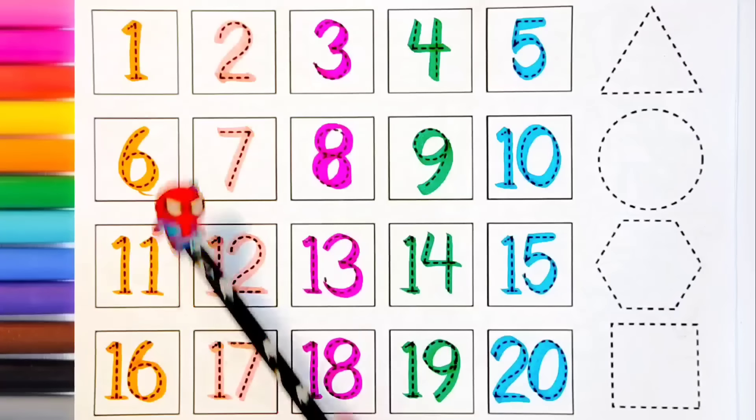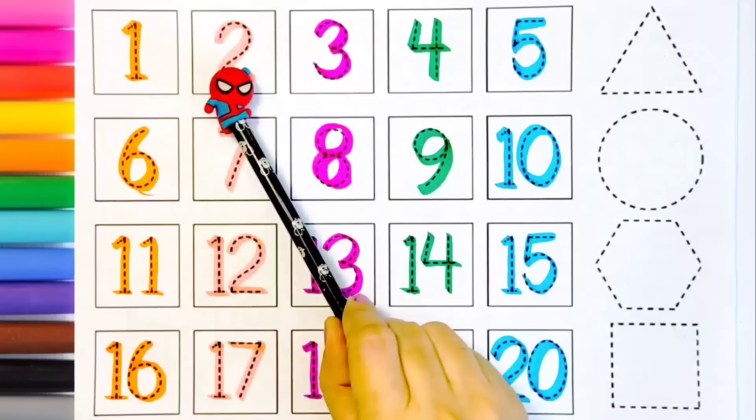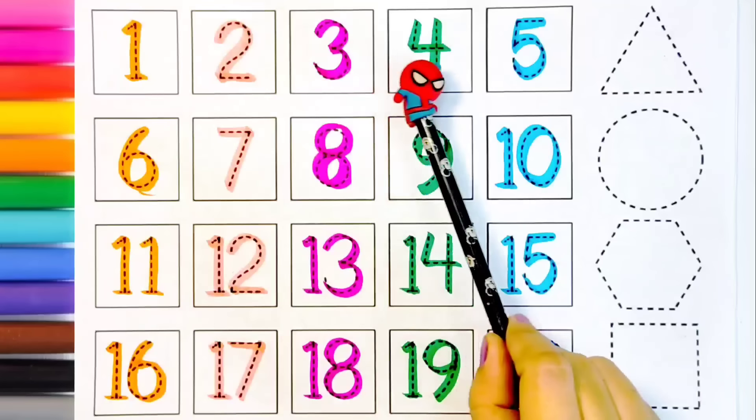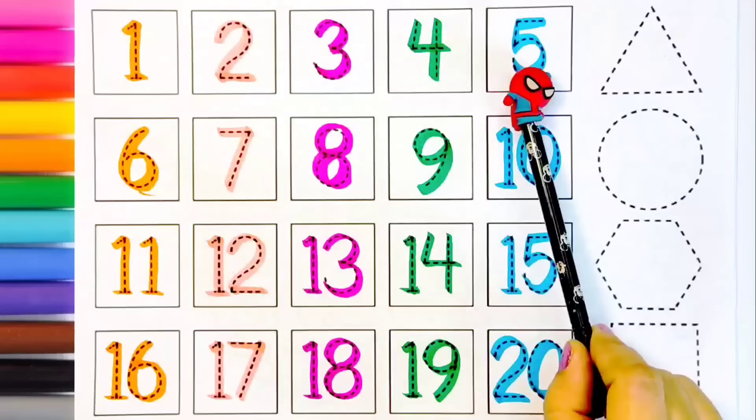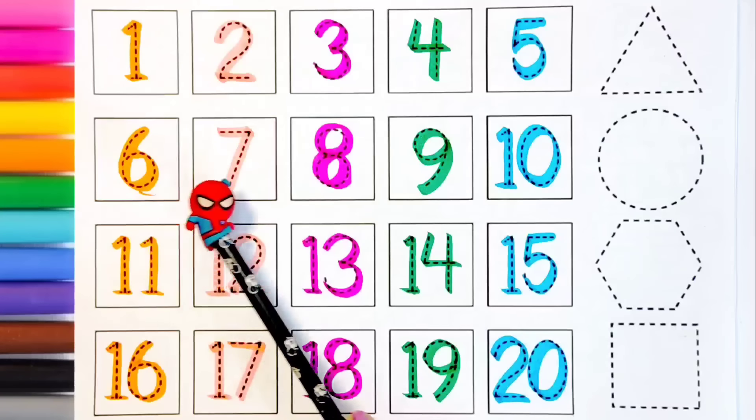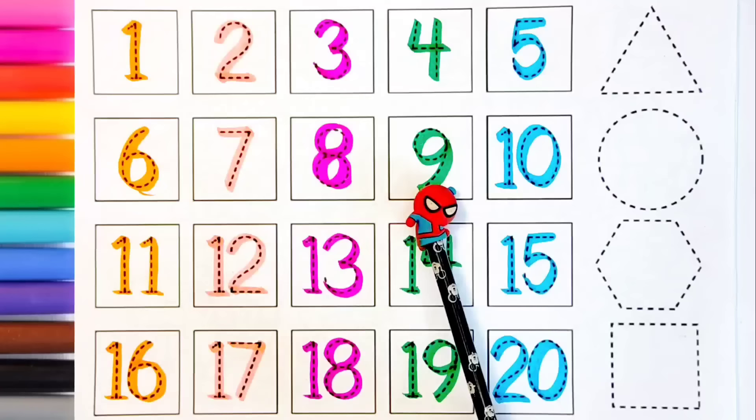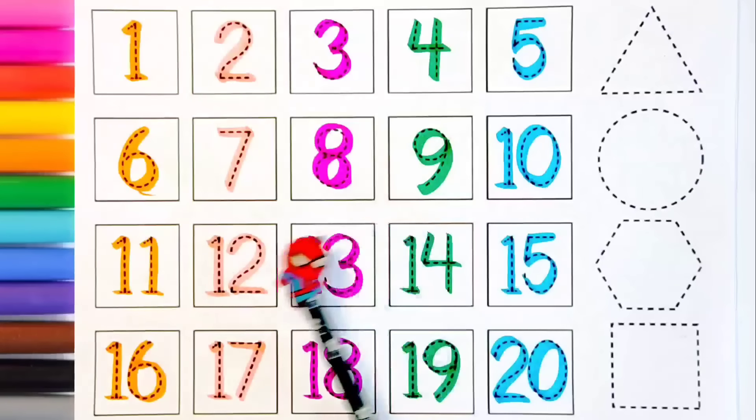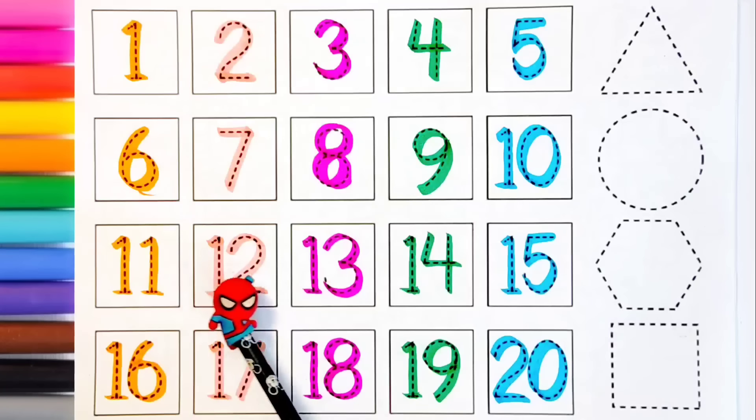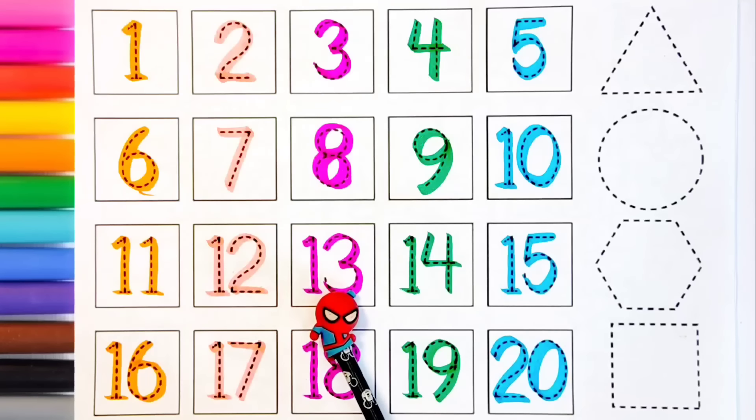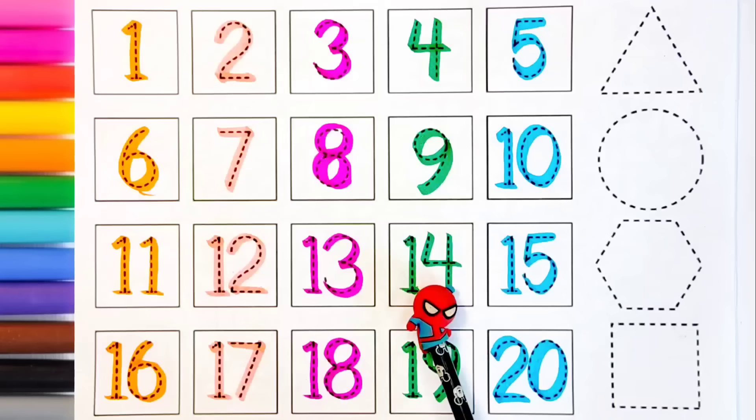Now reading time. One, two, three, four, five, six, seven, eight, nine, ten. Eleven, twelve, thirteen, fourteen, fifteen, sixteen, seventeen, eighteen, nineteen, twenty.